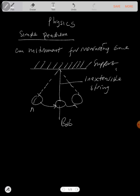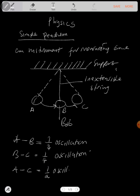Now let me call this part A, B, and C. From A to B, that makes a quarter oscillation. B to C also makes a quarter oscillation. A to C makes a half oscillation. Now A to C and back to A, that makes one complete oscillation.